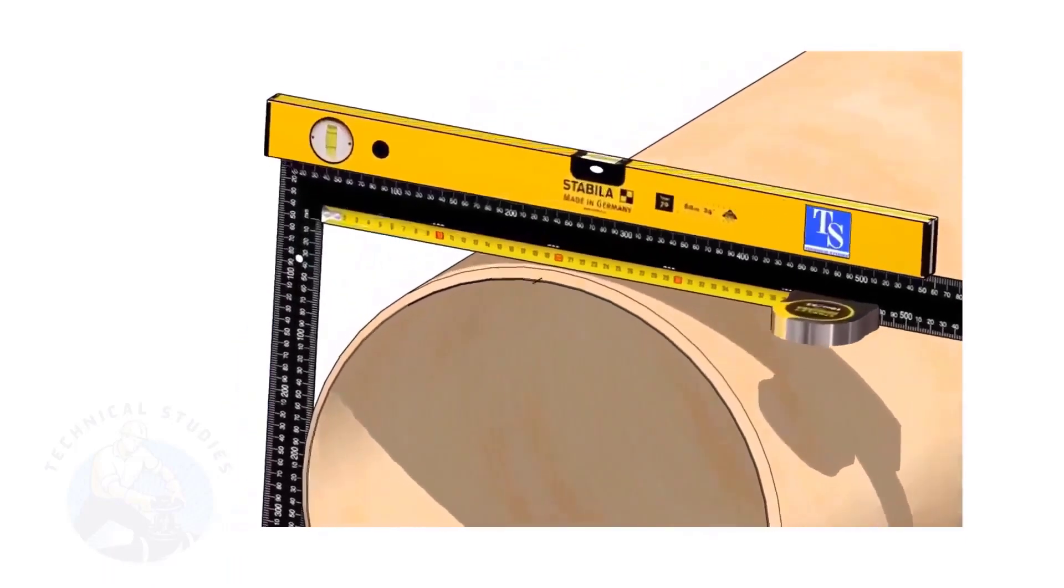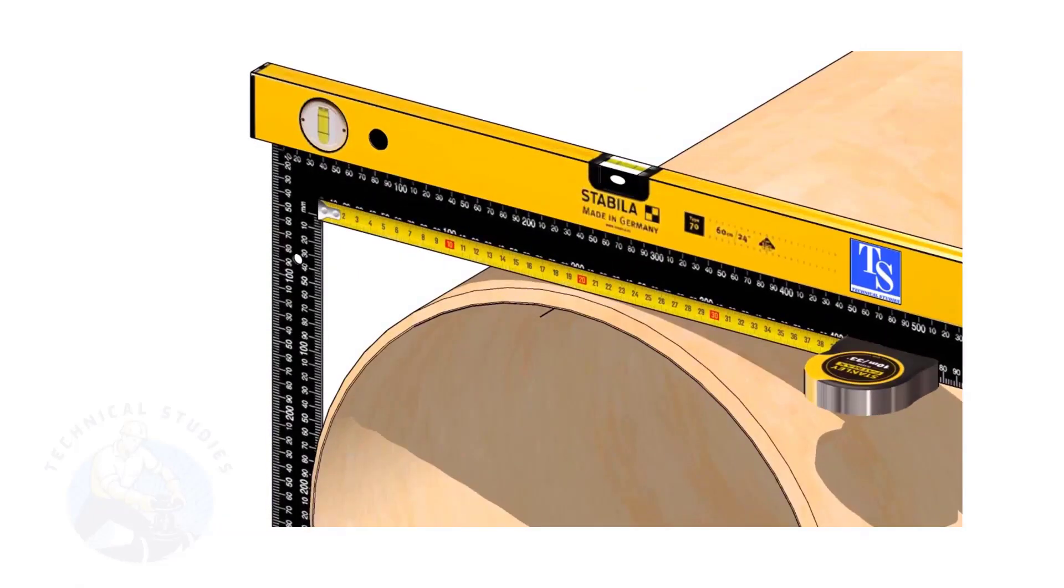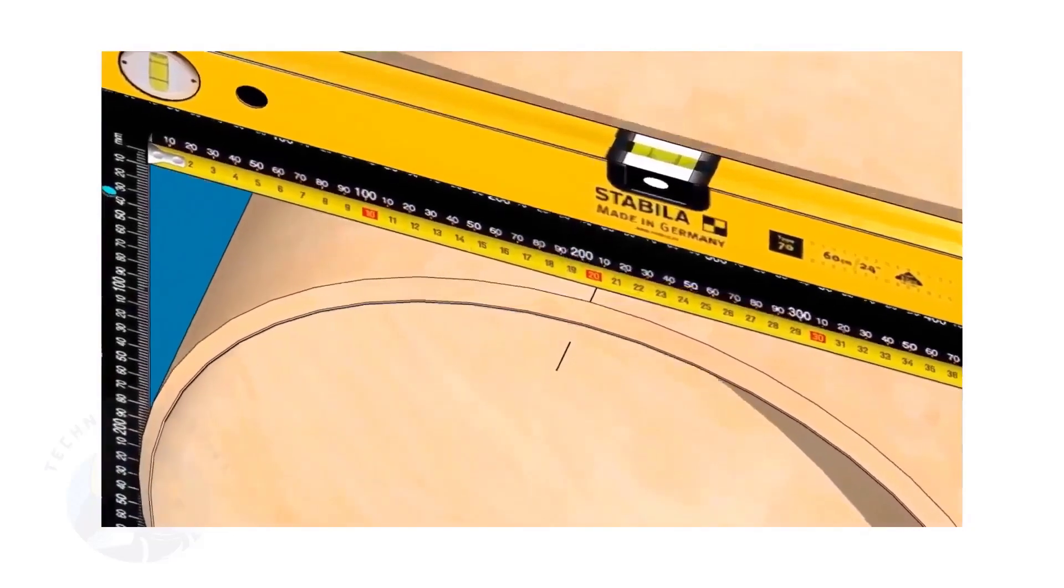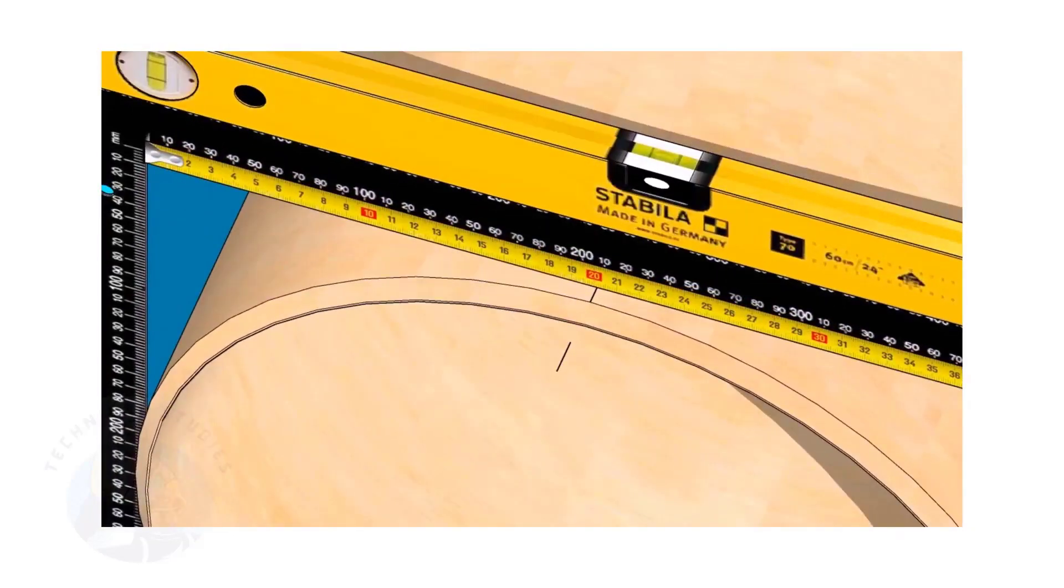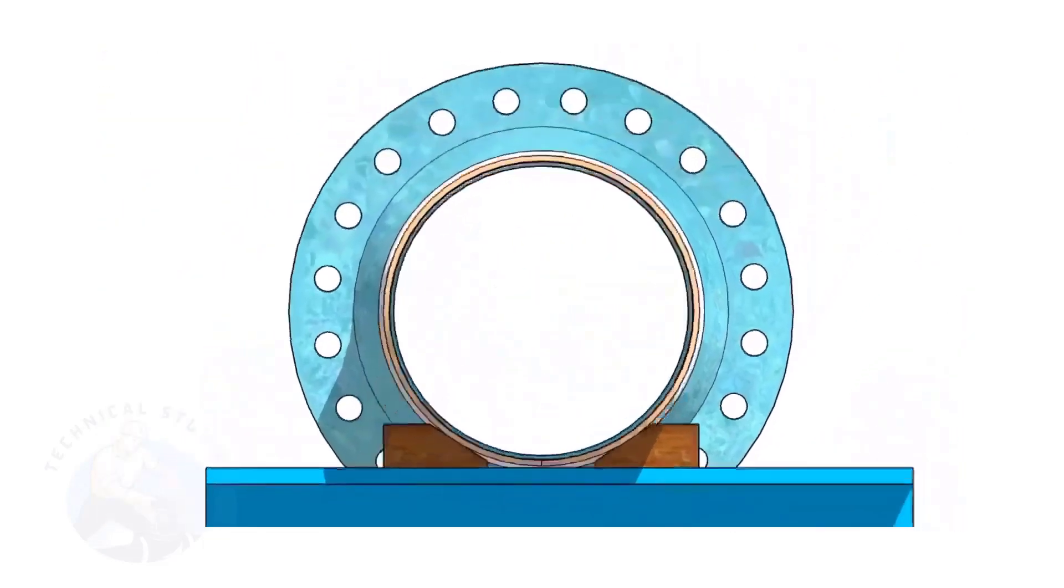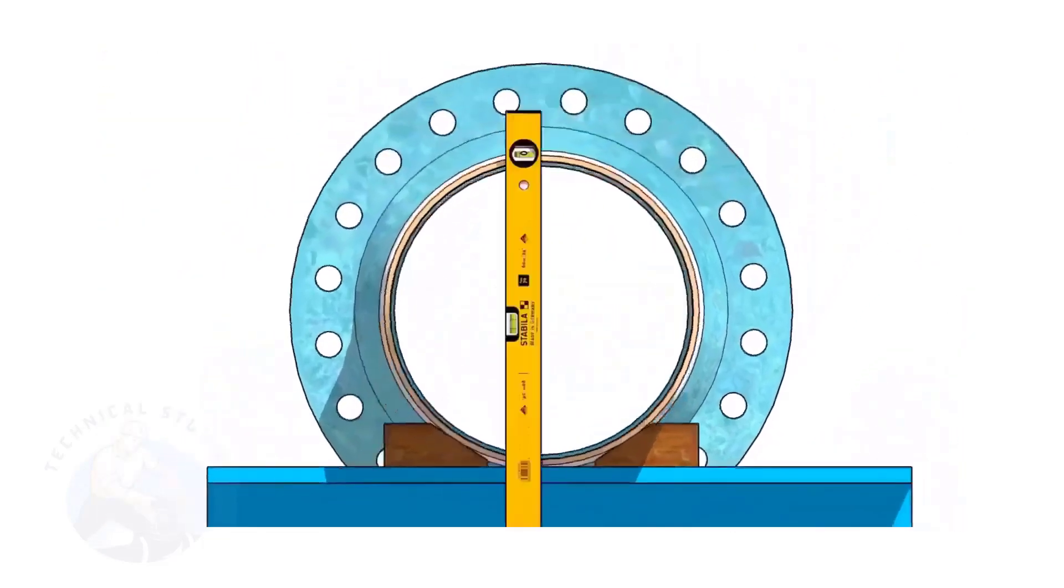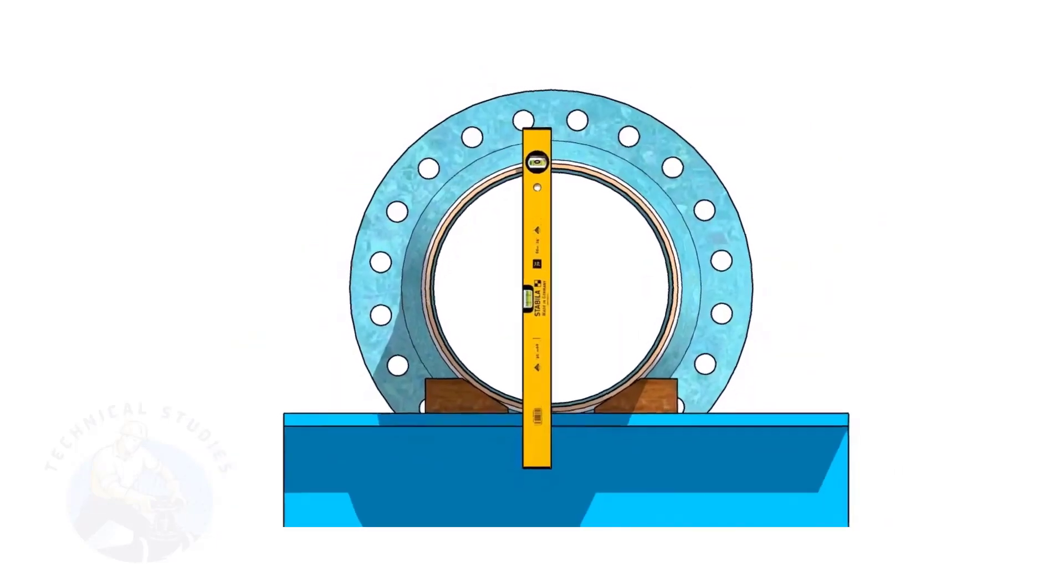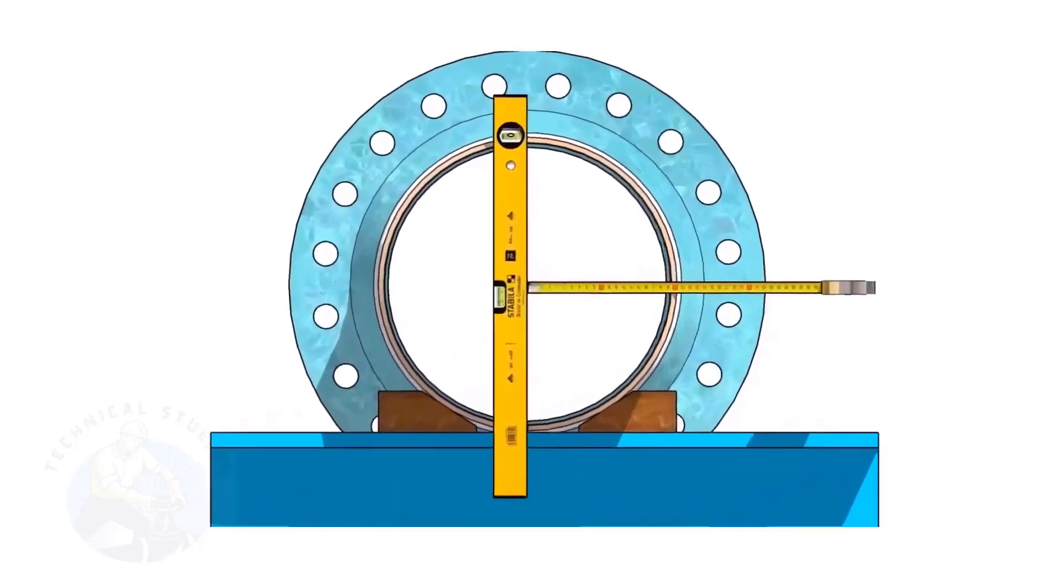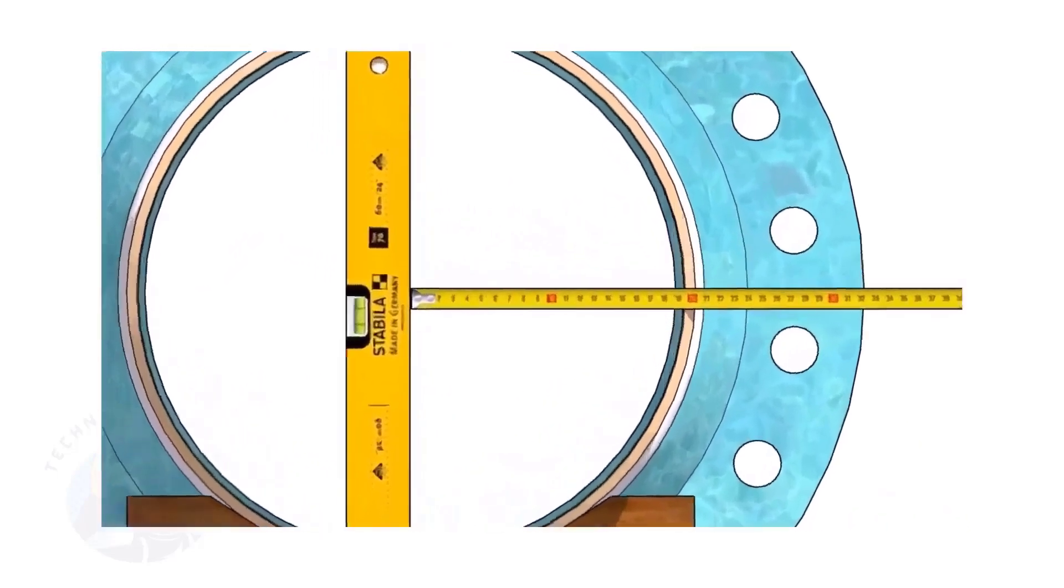Mark half OD of the pipe on the top side. Here, the half OD is 203 millimeters. Hold the spirit level vertically and transfer the top center mark to the bottom side as shown.